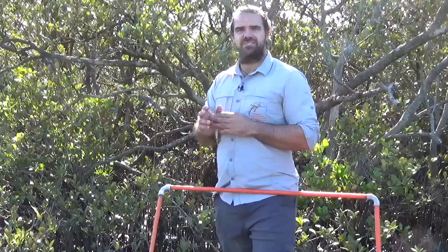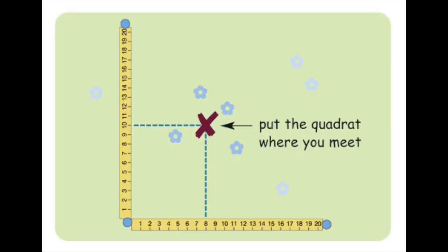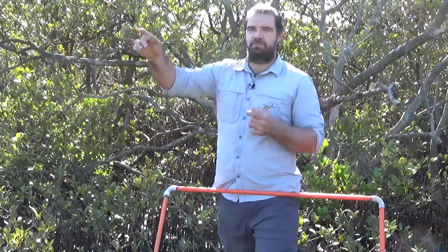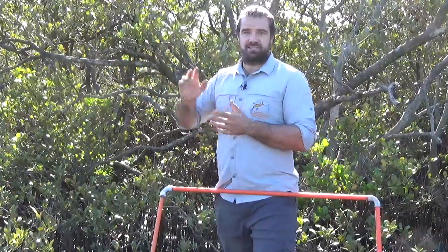The first is known as a coordinate method. For this methodology, tape measures are run in an X and a Y axis across a varying degree of distance depending on the site. Random numbers are then selected along these tape lines and used to form a coordinate somewhere in that grid, which is then a completely random selection for where the quadrat is placed.